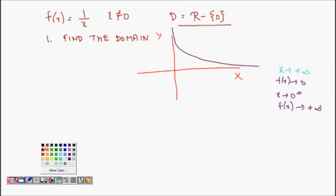Now, same thing we can do for x is less than 0. We have to analyze. When x tends to minus infinity, f(x) will tend to 0.